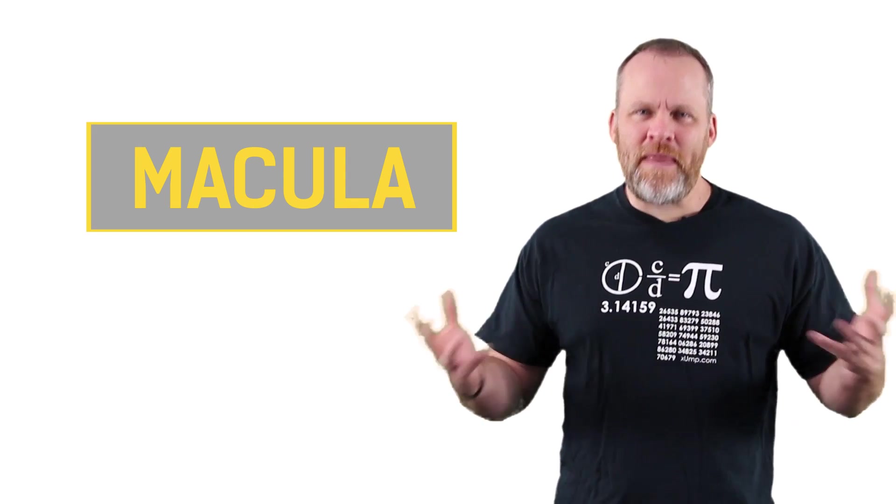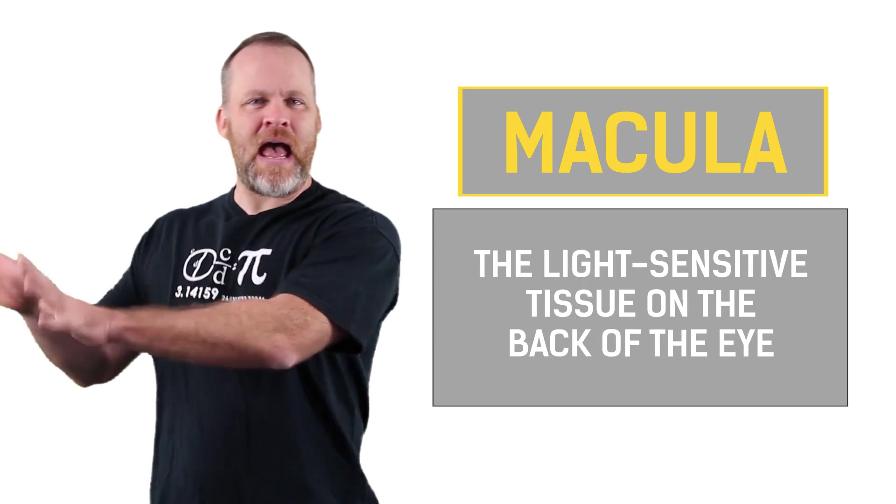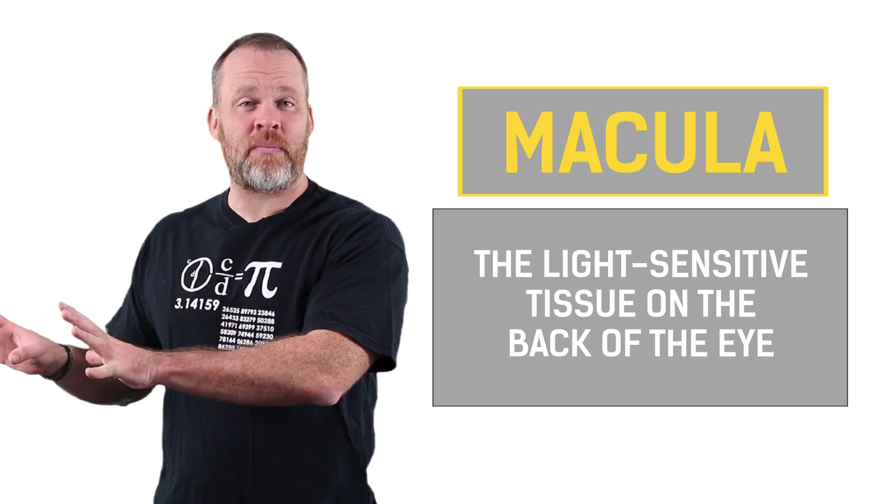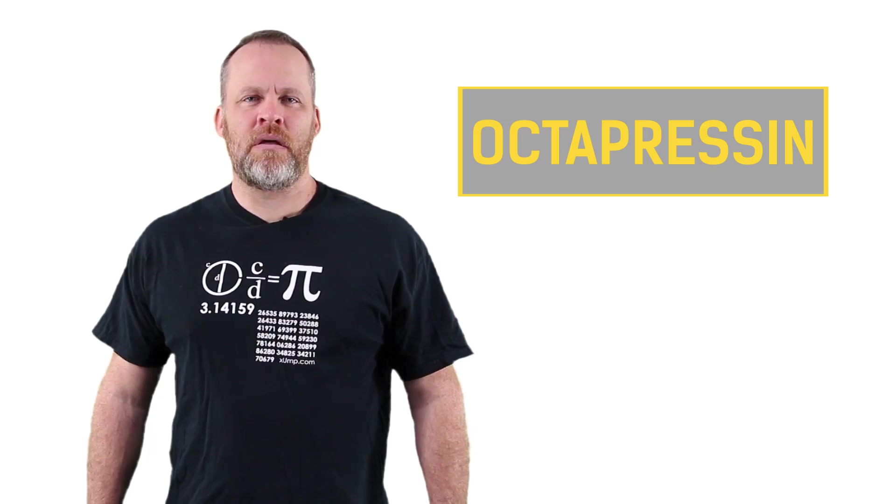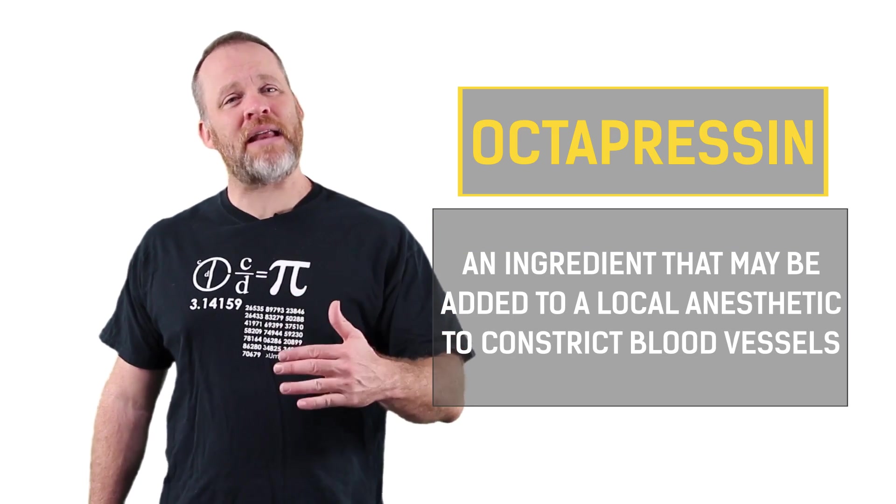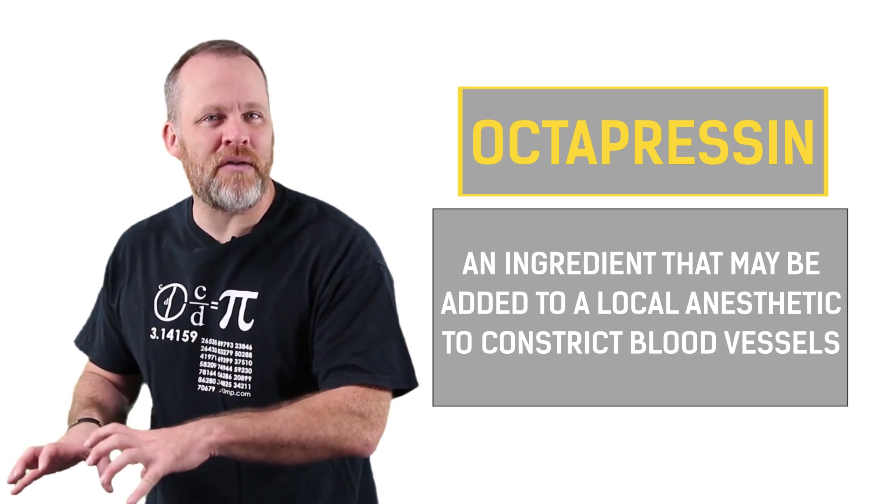Macula. What did that do? Light going into the eye and out as nerve signals, sending it to the brain. And finally, we had octapressin. What was octapressin? It was an ingredient to put in a local anesthetic to constrict the blood vessels.